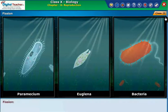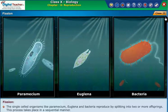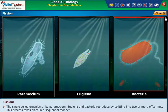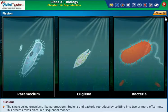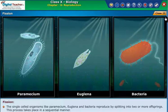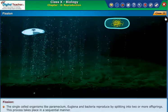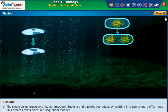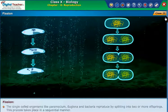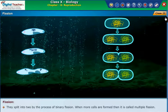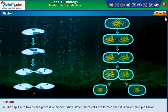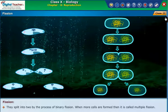Fission. Single-celled organisms like Paramecium, Euglena, and bacteria reproduce by splitting into two or more offspring. This process takes place in a sequential manner. They split into two by the process of binary fission. When more cells are formed, then it is called multiple fission.